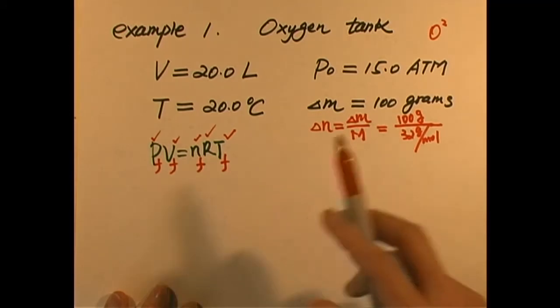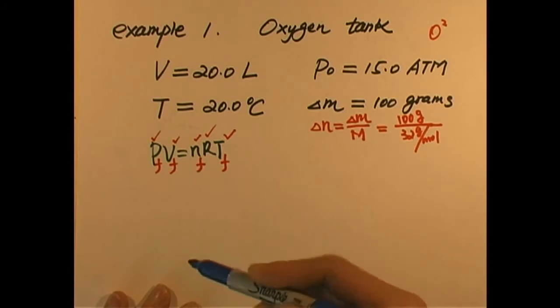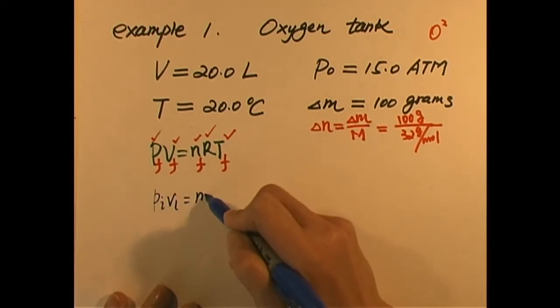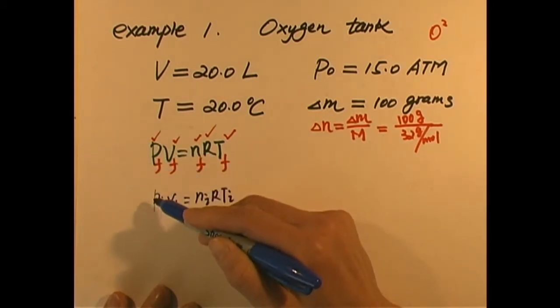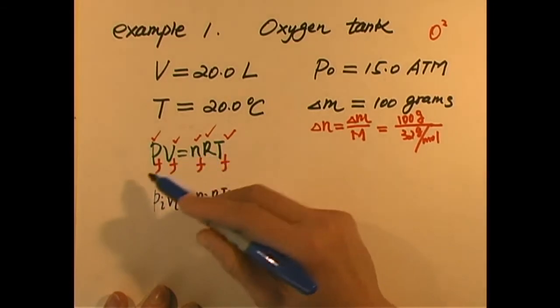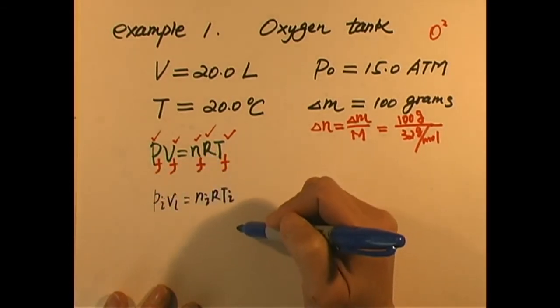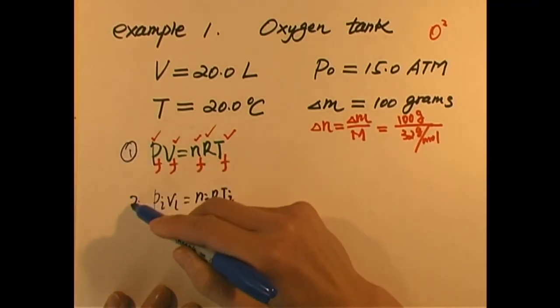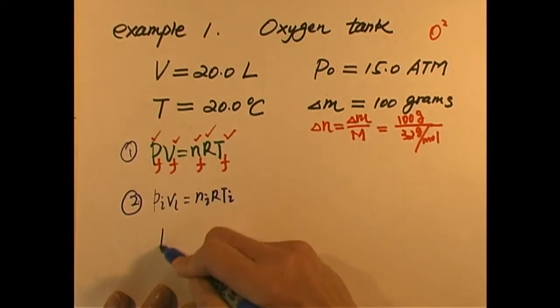It is 100 grams divided by the molar mass, since we talk about oxygen, which is O2. The molar mass for oxygen is 32 grams per mole. So this is how many moles of oxygen that we used. And R is a constant. We know temperature remains constant at 20 degrees Celsius. So if we know our final number of moles inside, we know our final temperature, we know our final volume, and we can find our final pressure.